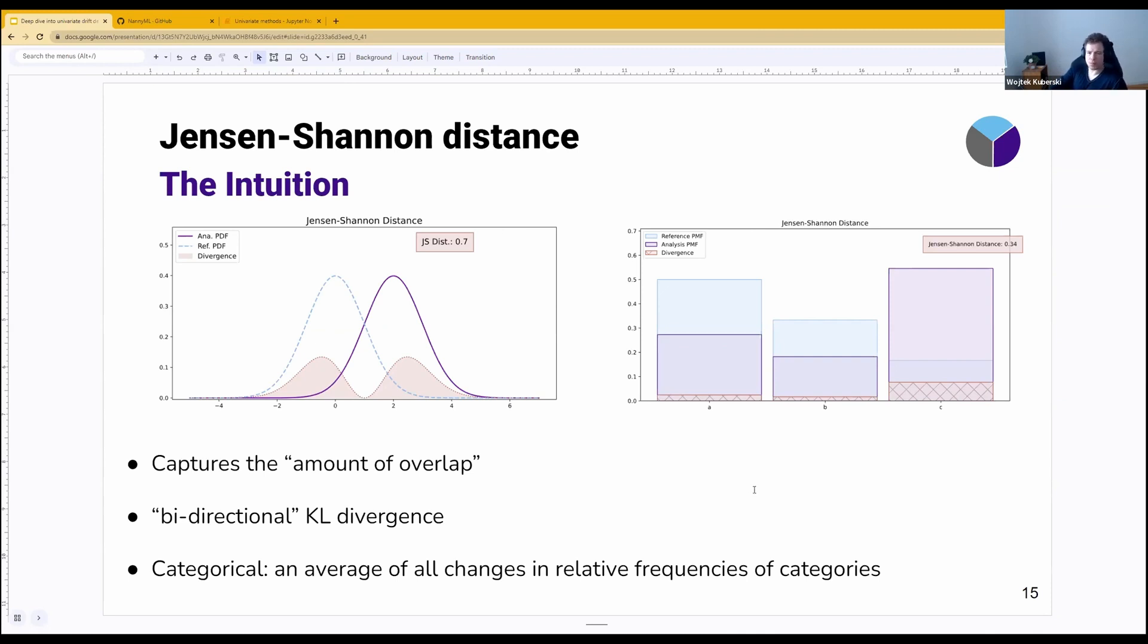So here you have examples of how it can look for both continuous and categorical data. Starting with continuous features, what it does is capture the amount of overlap, or more precisely, the amount of lack of overlap between two distributions.